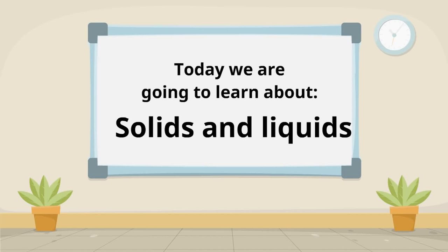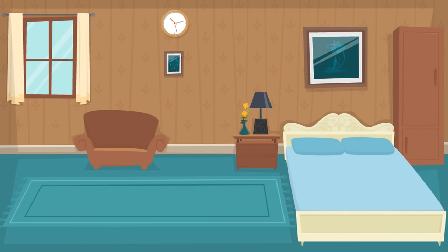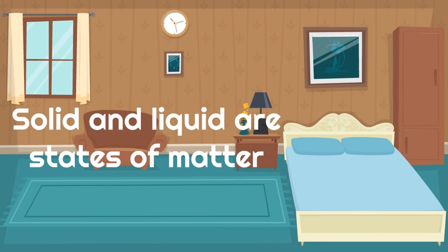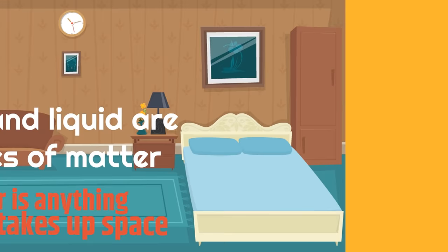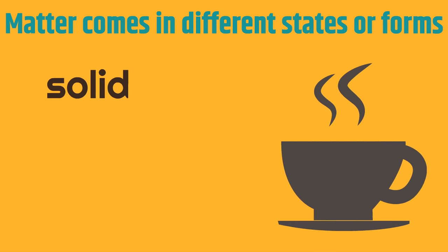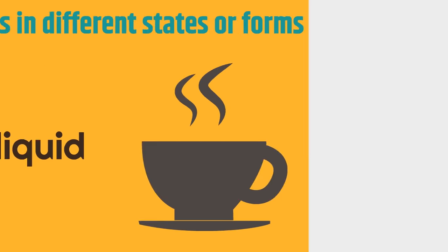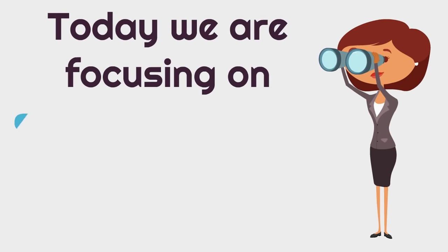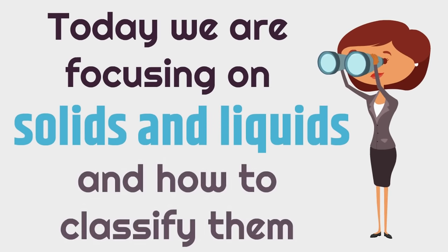Today, we are going to learn about solids and liquids. Solid and liquid are states of matter. Matter is anything that takes up space. Matter comes in different states or forms — there's solid, there's liquid, and there's gas. Today, we are focusing on solids and liquids, and how to classify them.